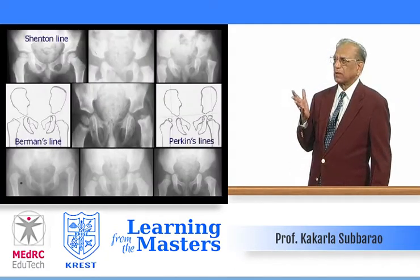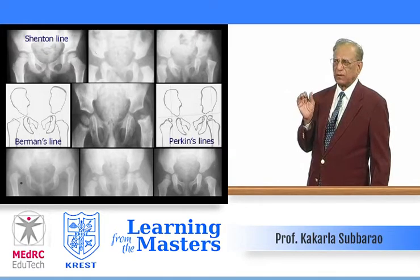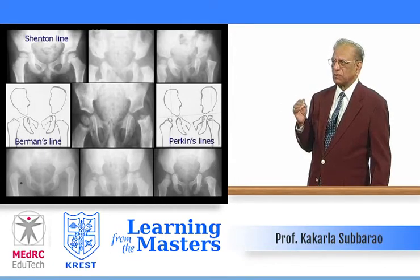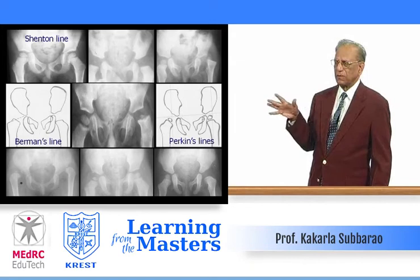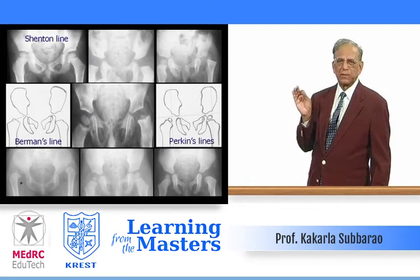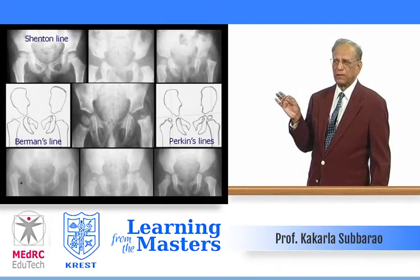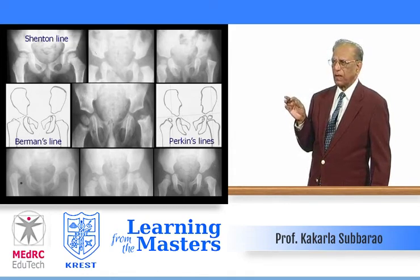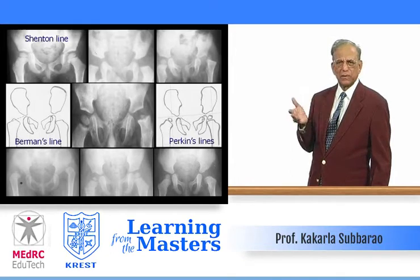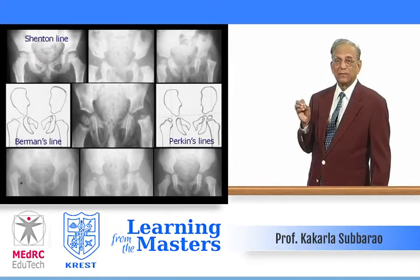The image on the left shows the normal hip at top — head and acetabulum in correct position. There are certain angles to measure; Shenton's line should be smooth. Any disruption indicates early dislocation. At lower left, there is bilateral dislocation of the hip. About 10% of patients have bilateral dislocation. Early detection of acetabular dysplasia is most important.